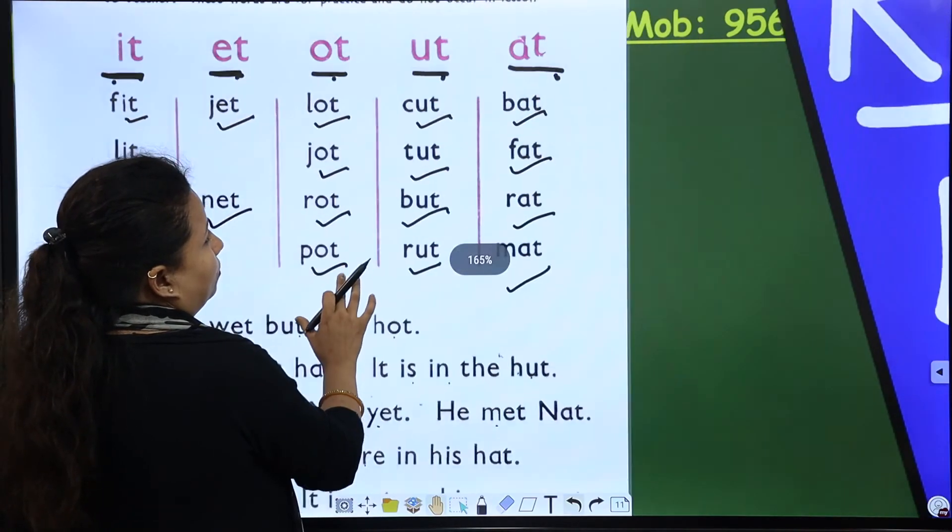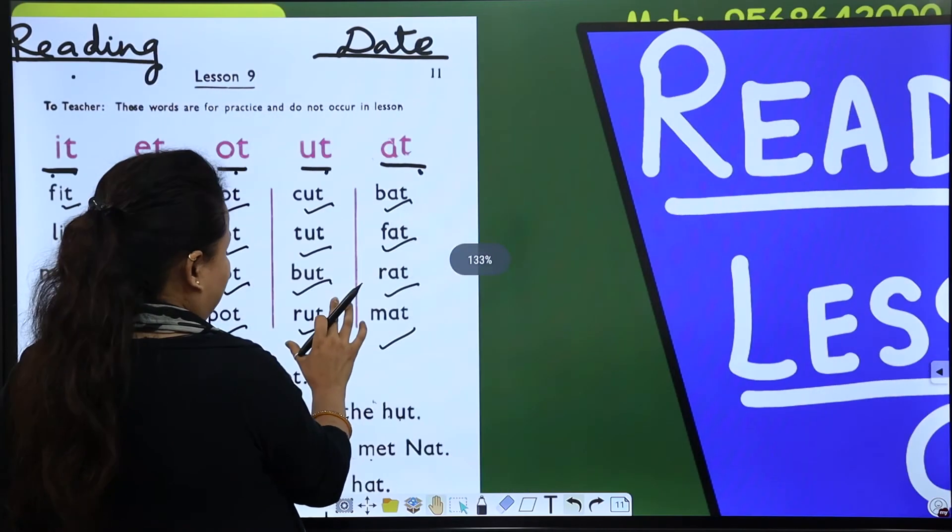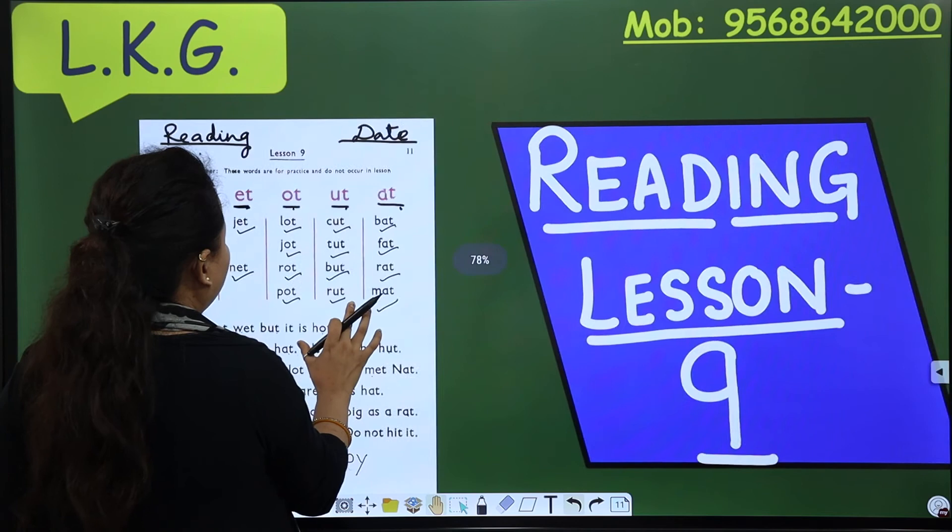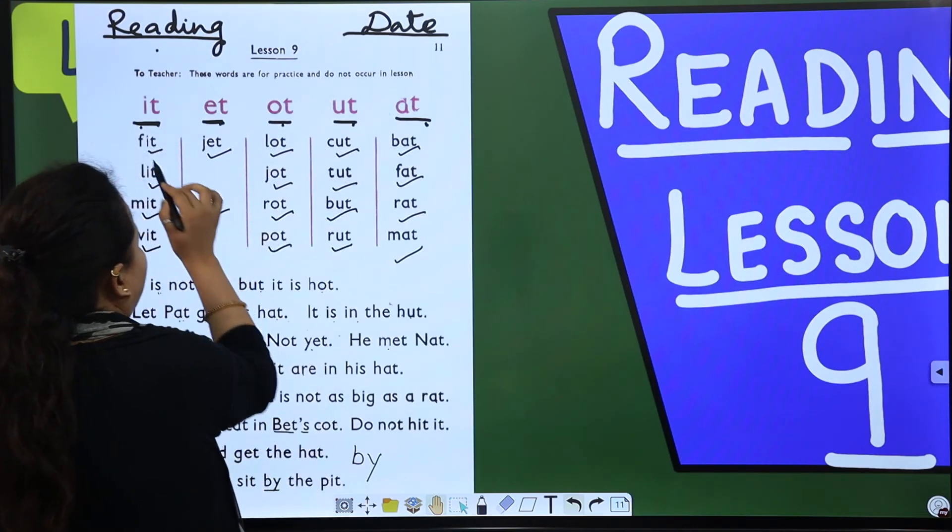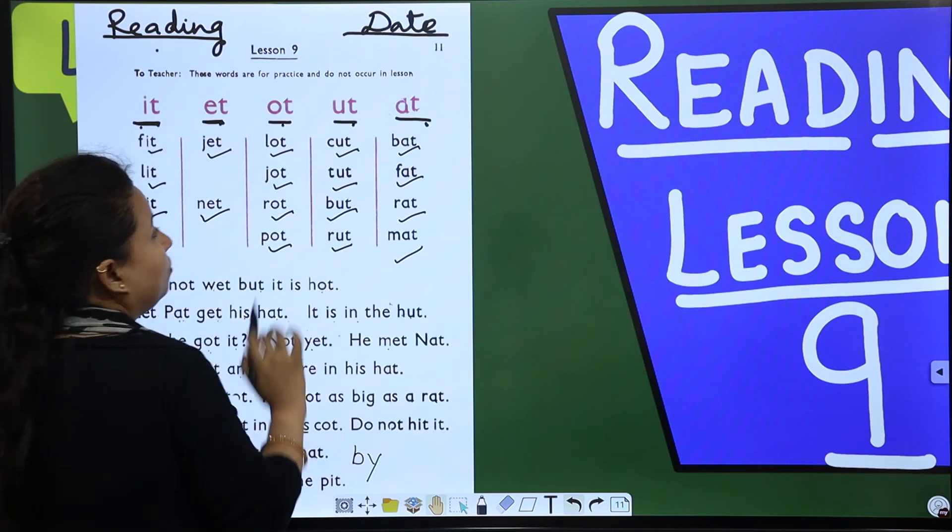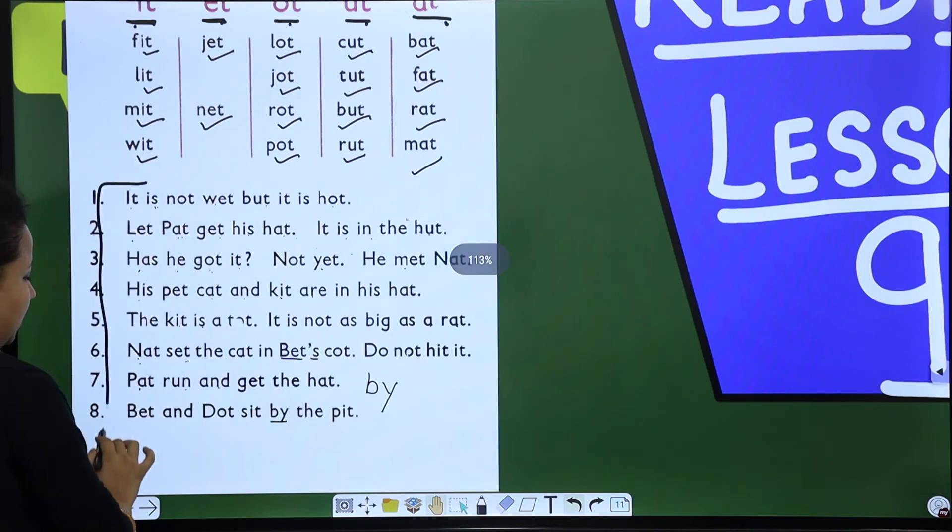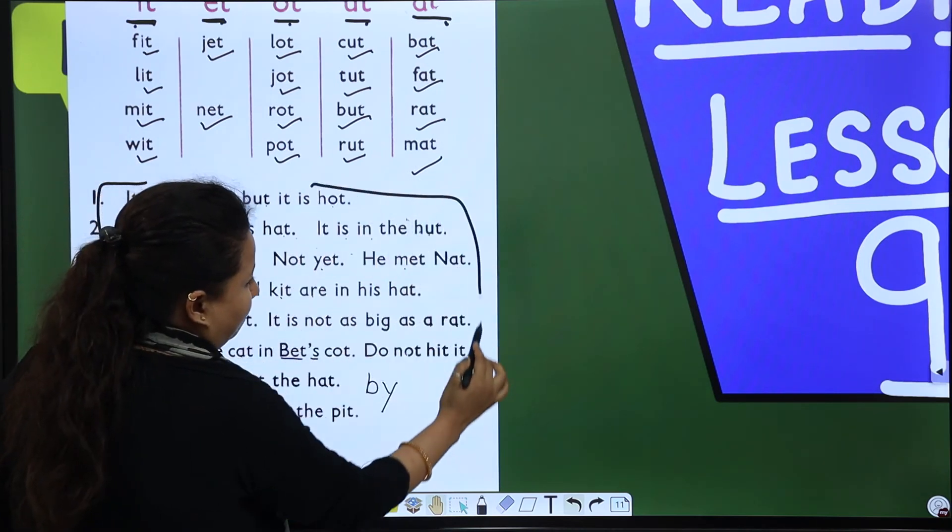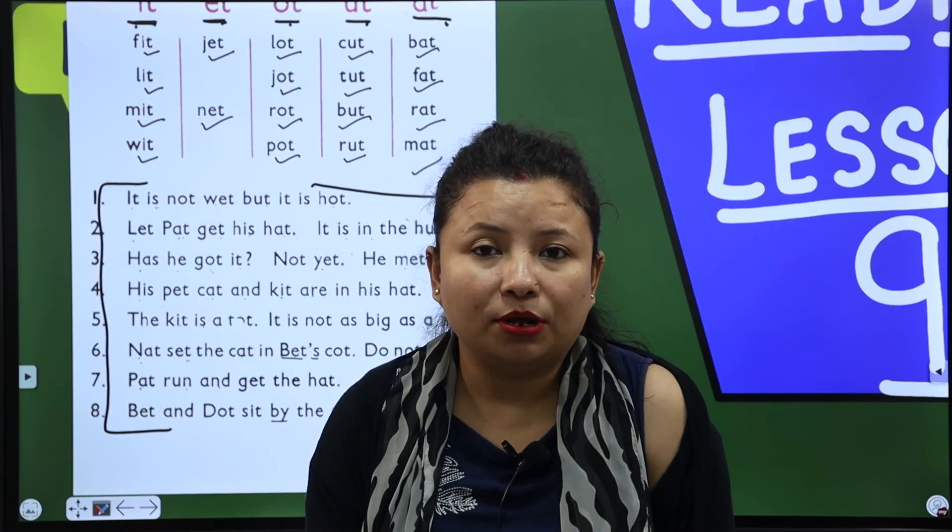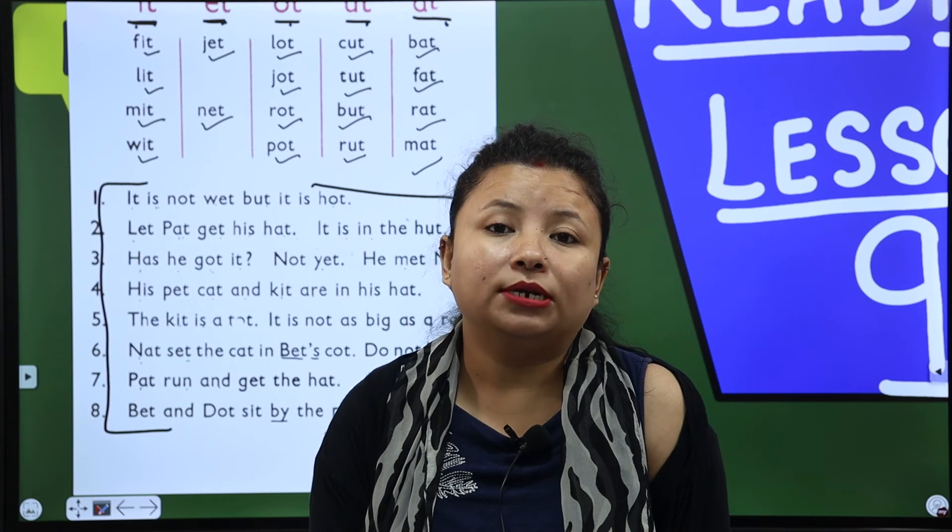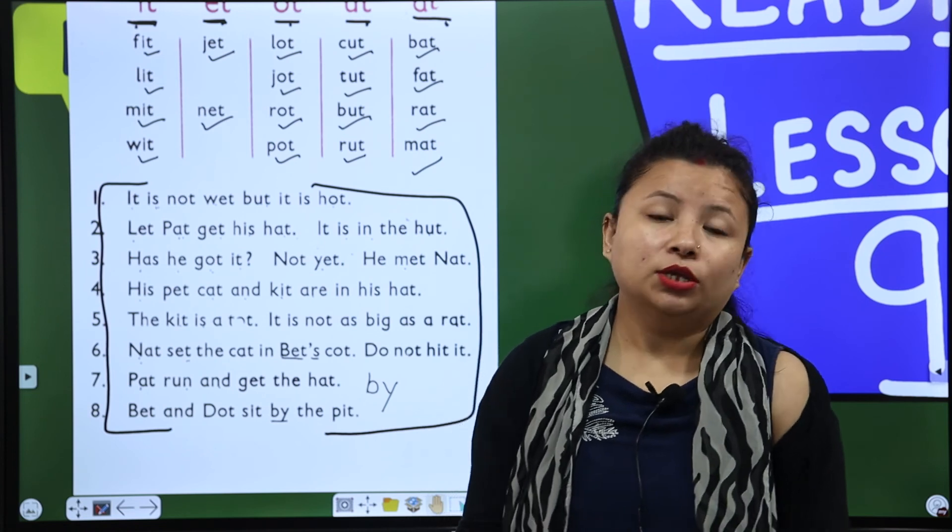Now, this lesson number 9 is complete. So now it is time to give you homework. You have to learn these words and write it in your fair notebook and you have to read these lines. Okay. You have to learn these lines, these chapters for dictation and for writing work. Is that okay?